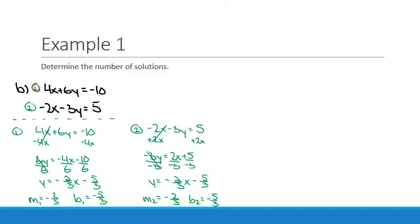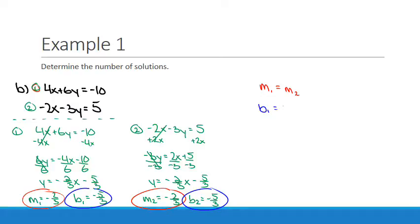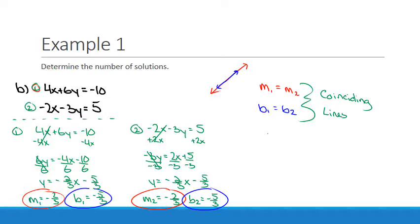We want to consider the slopes first. These slopes are equal — M1 equals M2. Now check out the y-intercepts — they are also equal, B1 equals B2. So when both are equal to each other, we know we have coinciding lines. They're really occupying the same space. Therefore, infinite solutions, because the real question is how many solutions.